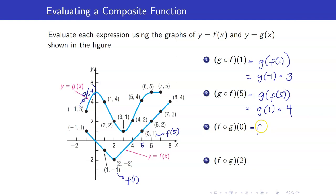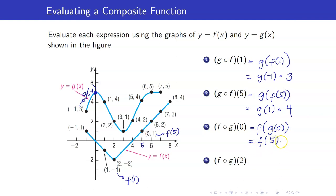Next, f circle g of 0 is f of g of 0. Let's look at the graph of g. When x is equal to 0, the y-coordinate is equal to 5. So g of 0 is 5. And f of 5, we already evaluated it before — f of 5 is equal to 1.